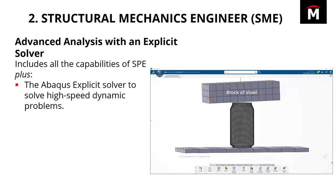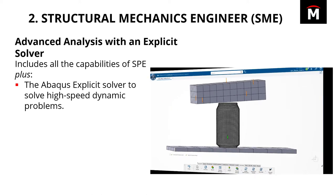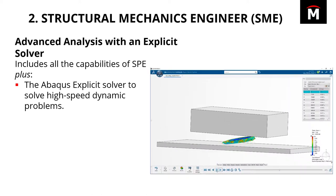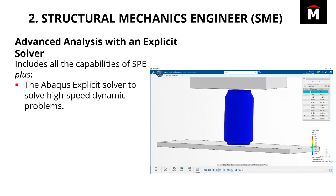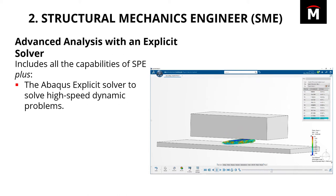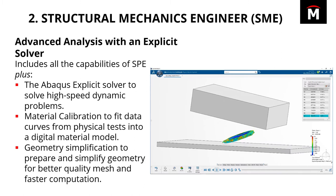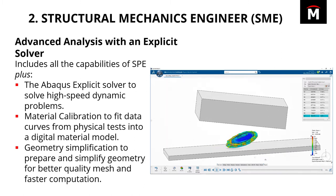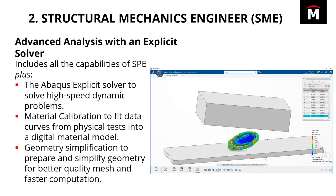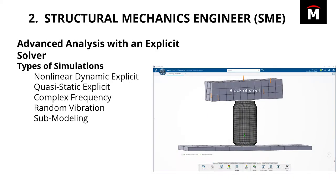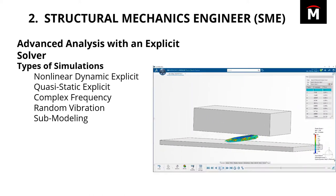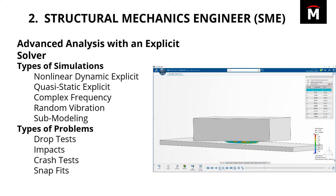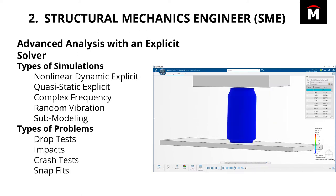On top of this, even more advanced analysis can be performed using Structural Mechanics Engineer, or SME. It includes all of the capabilities of SPE plus the powerful Abaqus Explicit Solver to analyze high-speed dynamic problems. It also includes a tool to fit data curves from physical material testing to create new material models, and tools that allow us to modify and simplify geometry directly inside of SME. SME's Explicit Solver allows us to solve nonlinear dynamic, quasi-static, complex frequency, random vibration, and sub-modeling problems — examples include drop tests, impacts, crash tests, and snap fits.